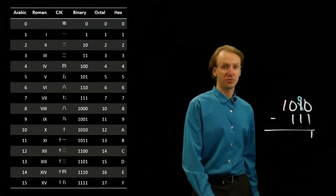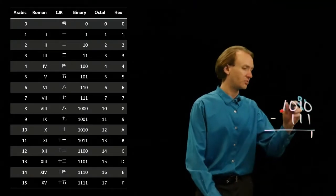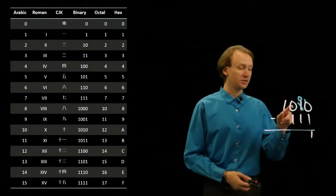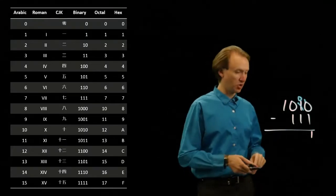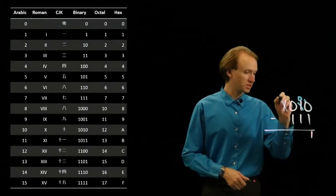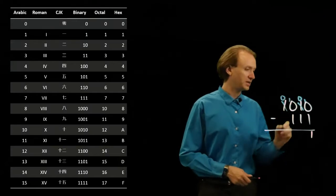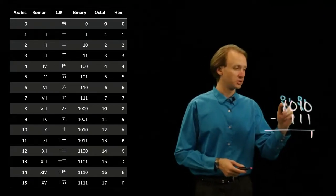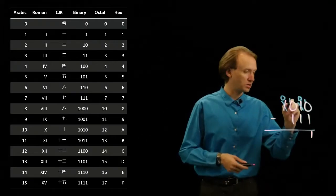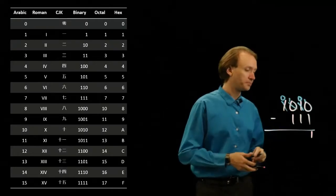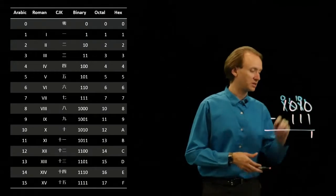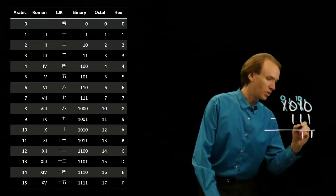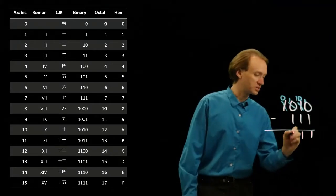Now I've got a 0 minus 1. Same thing. So, I'm going to have to come over here and borrow something, but I don't have anything here, so I need to come over to the next position and borrow something. So, this is now 0. Now I've got a 10 here, but I still need to borrow something from this place. So, 10 minus 1 leaves me with 1, and now I have a 10 in this position. So, 10 minus 1 is 1, and 1 minus 1 is 0.